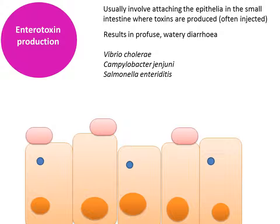Campylobacter is really important in the UK — it's the number one cause of gastroenteritis. Most people think they have E. coli or Salmonella, but it's actually Campylobacter. Salmonella is also really important, and in the context of notifiable diseases, these are all really important to think about.